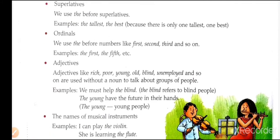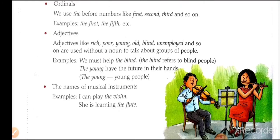Adjectives like 'rich,' 'poor,' 'young,' 'old,' 'blind,' 'unemployed,' and so on are used without a noun to talk about groups of people. Examples: 'We must help the blind' — 'the blind' refers to blind people. 'The young have the future in their hands' — 'the young' means young people. We also use 'the' with the names of musical instruments. Examples: 'I can play the violin'; 'She is learning the flute.'